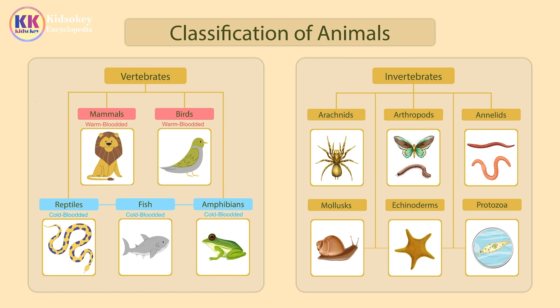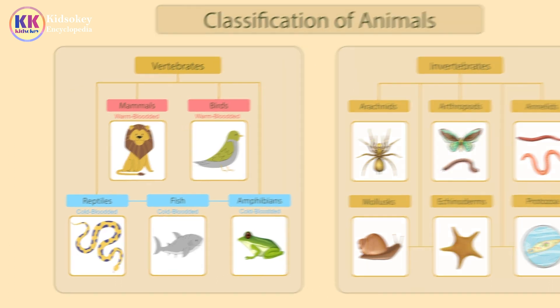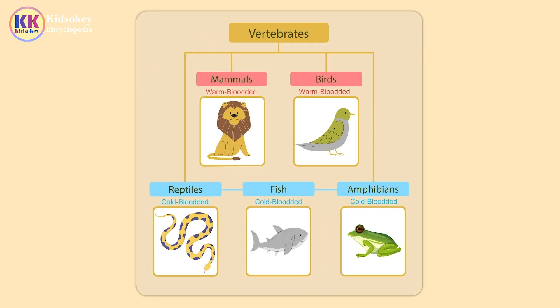The entire animal kingdom is divided into two main groups: vertebrates and invertebrates. Animals with backbones are called vertebrates and are divided into two groups: warm-blooded and cold-blooded.